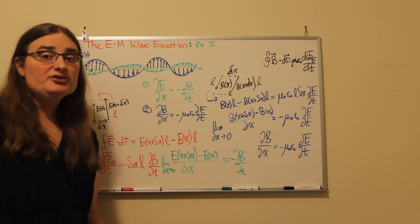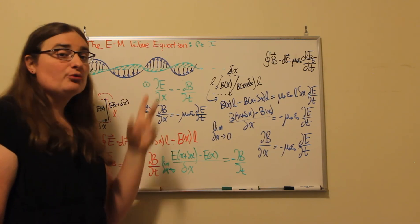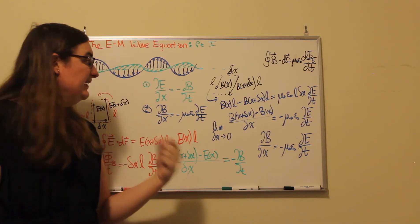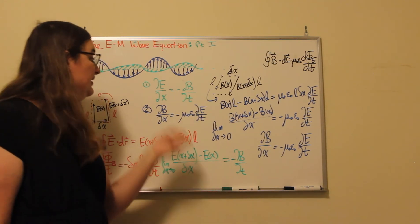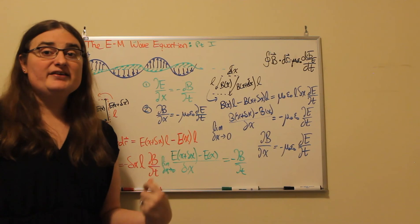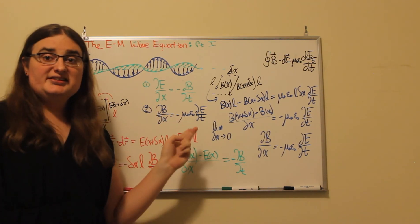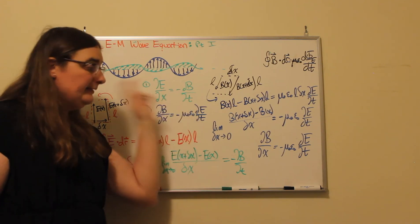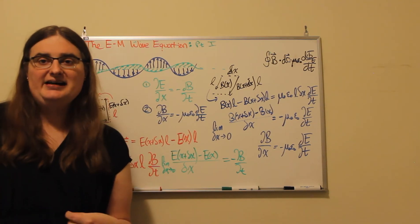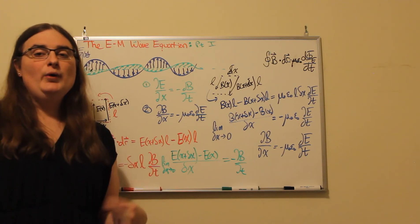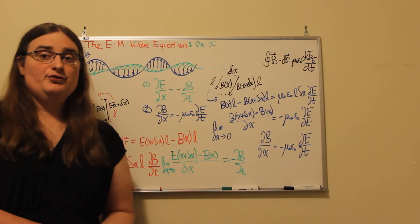In part two, we'll put both pieces together: the partial derivative of E with respect to X equals minus the partial derivative of B with respect to time, and the partial derivative of B with respect to X equals minus μ₀ε₀ times the partial derivative of E with respect to time — and show how these give us an equation for an electromagnetic wave. Stay tuned for part two.